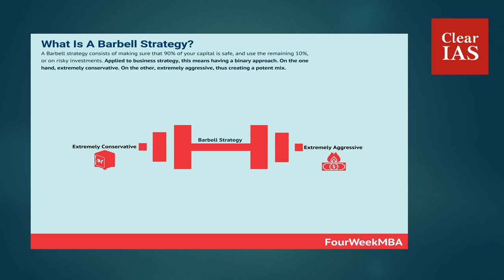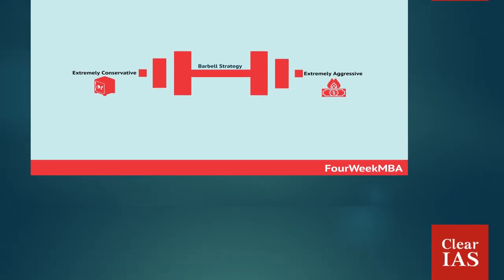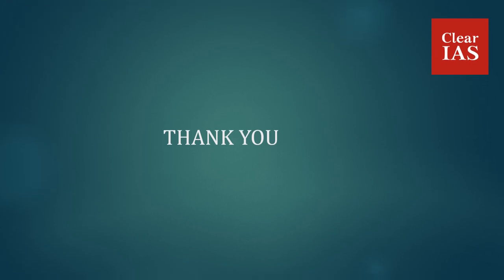In the case of the economy, the government brought in a lot of reforms like labor codes and deregulation of various sectors. Whereas for improving the lives of the people, it brought in various packages like Atmanirbhar Bharat. The adoption of the Barbell Strategy was how the government successfully dealt with the COVID crisis in the country. This was a short discussion regarding the Barbell Strategy. Thank you and please subscribe to our channel, Clear IIS.